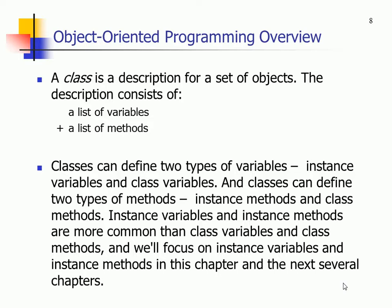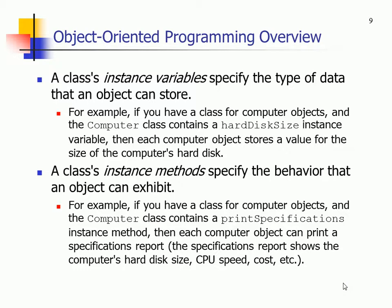Classes define two different types of variables: instance variables and class variables. Classes can also define two types of methods: instance methods and class methods. So far we've only used class methods — we haven't used instance methods yet. Instance methods and instance variables are more common than class variables and class methods, so we'll focus on those first.